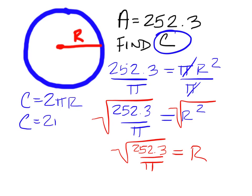So c equals 2 pi times what we just found, which is the square root of 252.3 over pi. In the calculator, you can do 2nd x squared, 252.3 divided by pi. It comes out to be 8 and some change, but leave that in the calculator and multiply it by 2 pi. You should get an answer for circumference of 56.3.